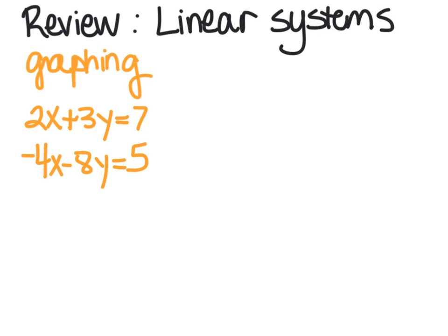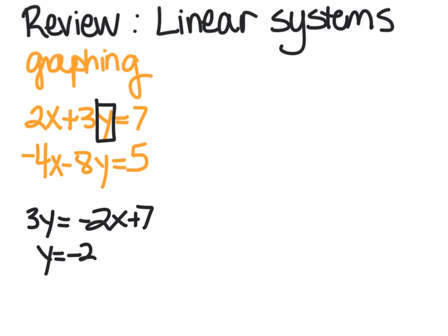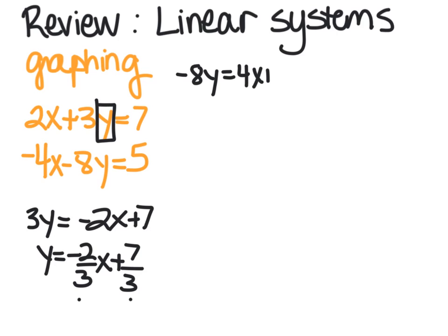So when you graph these, if you're going to use your graphing calculator, you're going to want to get y by itself. So if we took this first equation, we would subtract 2x from both sides, and then divide by 3. So we'd have y equals negative 2 thirds x plus 7 thirds, and then we could put that into our calculator. Or we could graph it by hand with a y-intercept of 7 thirds and a slope of negative 2 thirds. Then we take the other one and add 4x to both sides and divide by negative 8. And we get 4 over 8 is negative 1 half x,